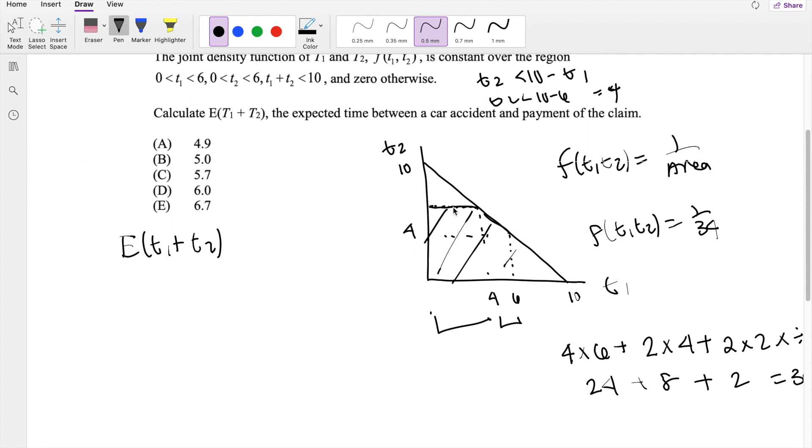And it's also uniform on this interval here. And this is independent. So then we can say that this is also equal to the expected value of t1 plus the expected value of t2.